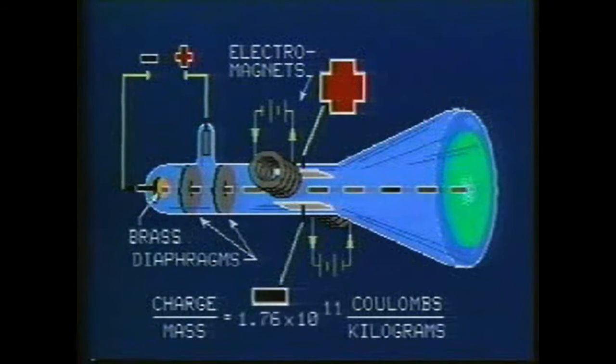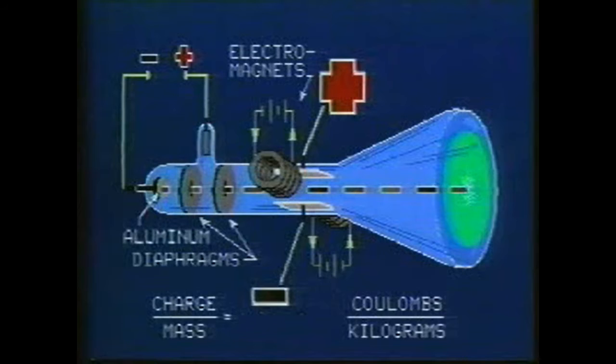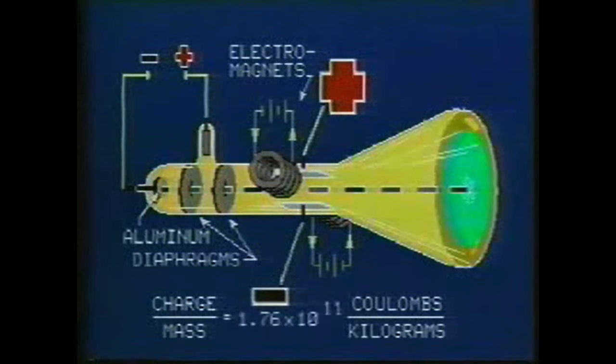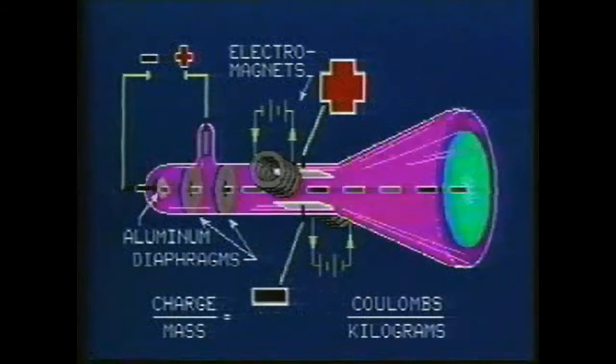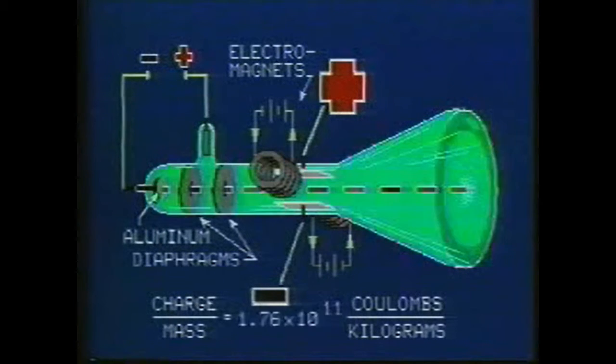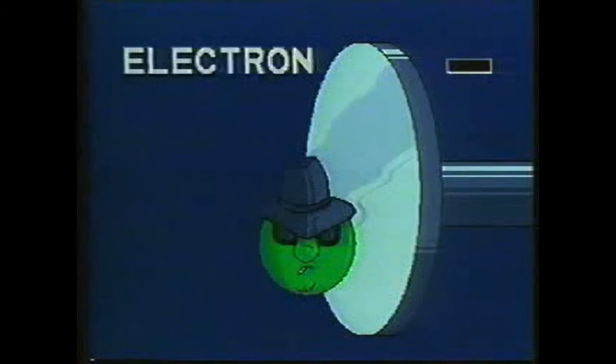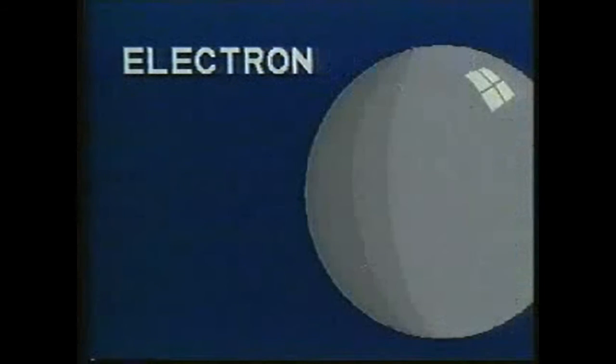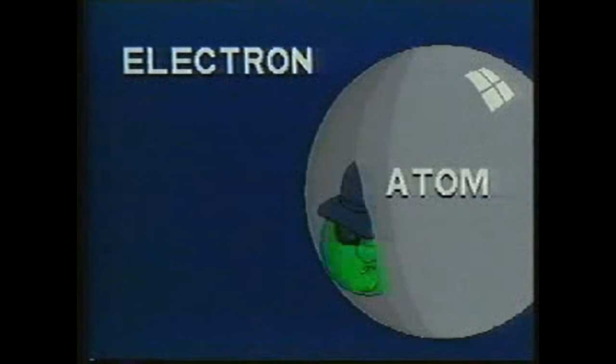Cathode terminals made of different metals had no effect on this ratio, nor did traces of different gases in the near vacuum. It appeared that these cathode ray particles, rechristened electrons, were a fundamental particle of all matter. Was this an indication that ultimate smallness, the atom, is composed of something still smaller?